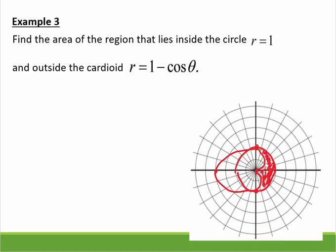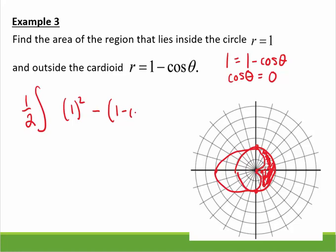So I need to find those thetas where they intersect. Oh, well, okay. I need to find the thetas where they intersect. You could set the two equations equal. And that's when the cosine of theta equals 0. We could see it because of how we graphed it. So I have 1/2 the integral of the outer function squared minus the inner function squared, dθ.